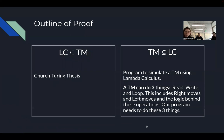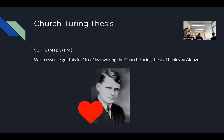In our proof we're trying to prove that lambda calculus is equivalent to Turing machines in what it can compute. To do this we have to prove two things: first, that lambda calculus is a subset of Turing machines — and we get this for free with the Church-Turing thesis — and second, that Turing machines are a subset of lambda calculus, which we show by simulating a Turing machine in lambda calculus expressions. A Turing machine can read and write to its tape, loop forever, and move left and right.